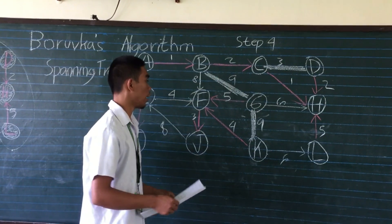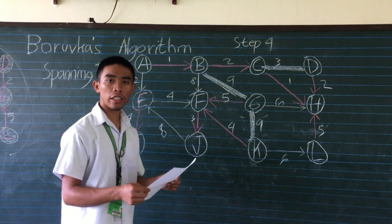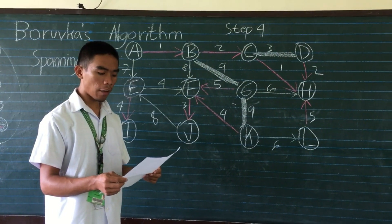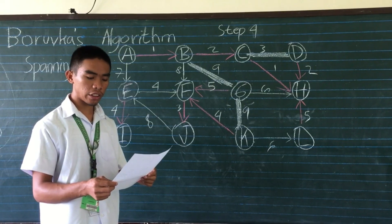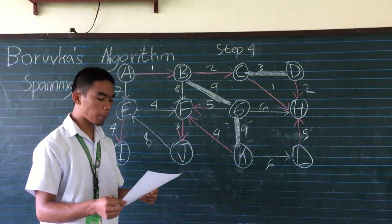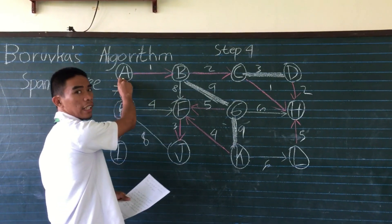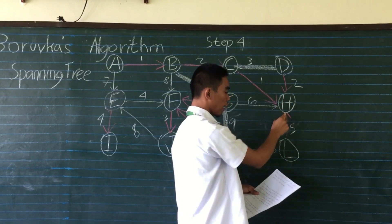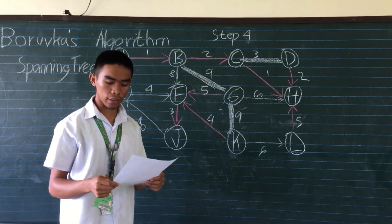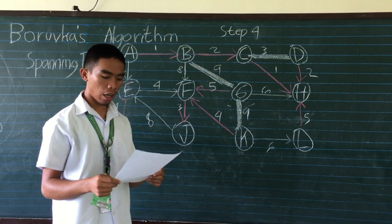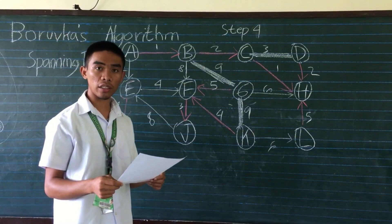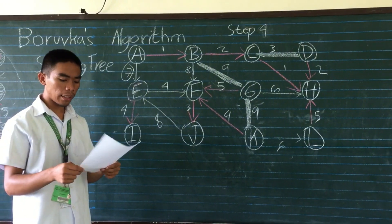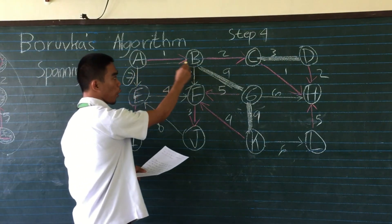Step 4: Repeat the algorithm for each component — each differently colored set. This time, for each node choose the cheapest edge outside of the component. For example, A, B, C, D, H, L is one component. For node A, the cheapest edge outside the component is 7, because node 1 is connected to component B.